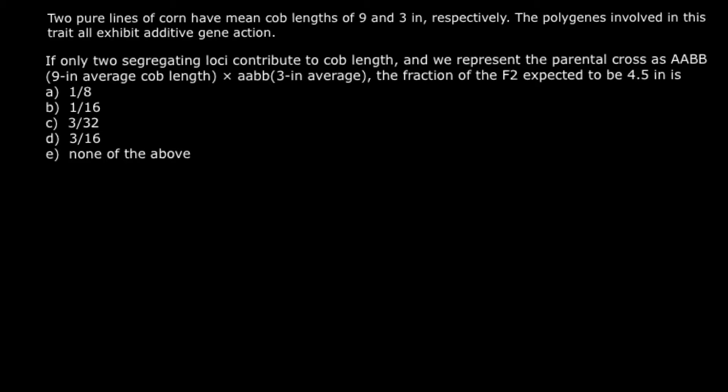The question is: if only two segregating loci contribute to the comb lengths, and we represent the parental cross as homozygous dominant for both genes for the 9-inch average, crossed with homozygous recessive for both genes for the 3-inch average, what fraction of the F2 is expected to have a 4.5-inch comb length? Here are 5 answers to choose from.